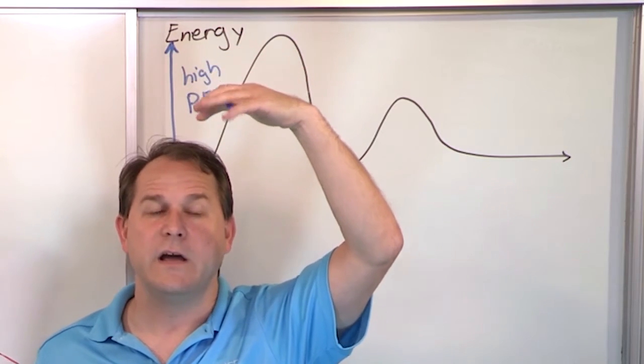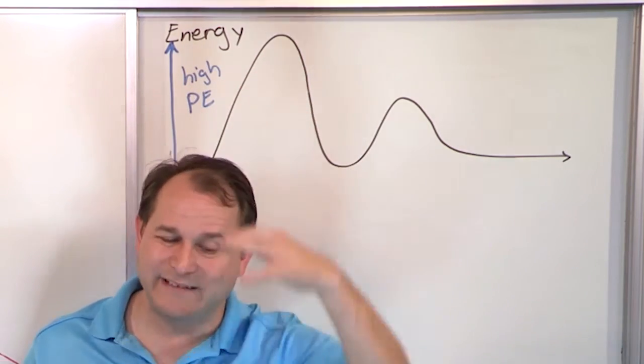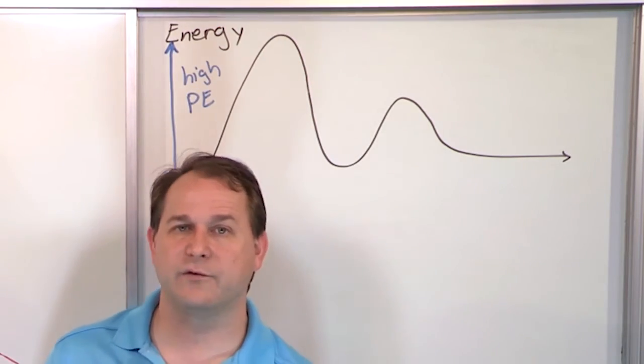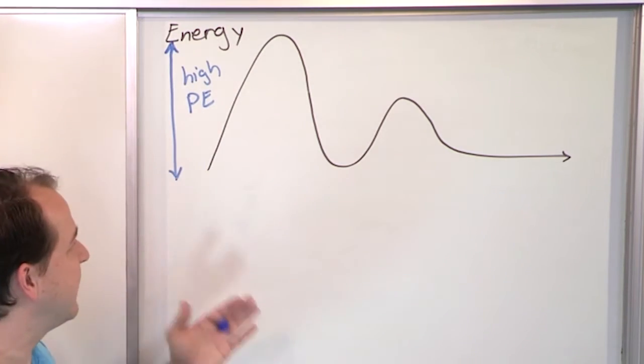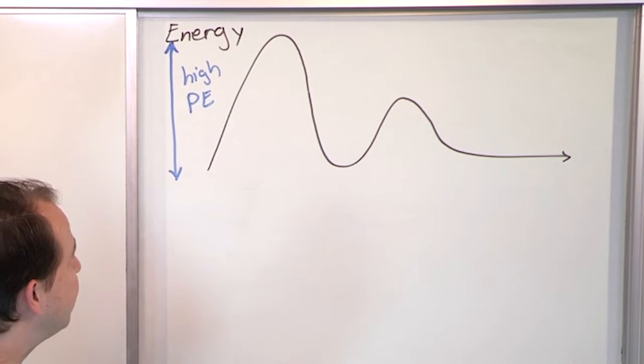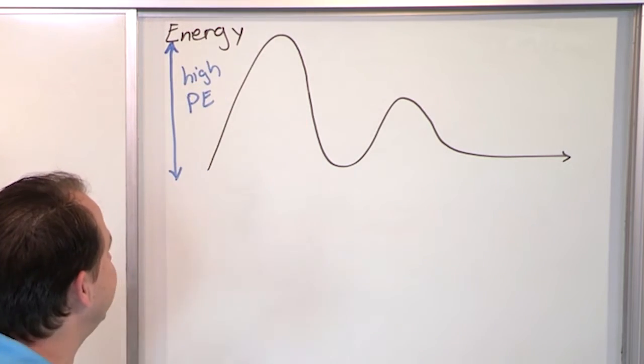But the reason it has potential energy at the top is because we're in a gravity field. So if you take something very high off the ground, if you were to drop it, it has a high potential to accelerate down to the ground and to hit the ground, right? So to do something, to hit the ground, to impart some energy into the ground. So we say it has a high potential energy here.